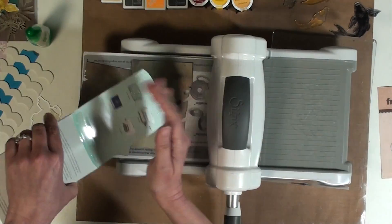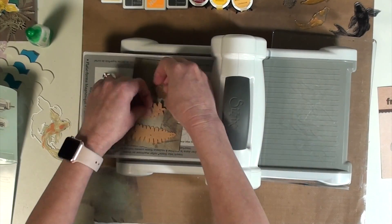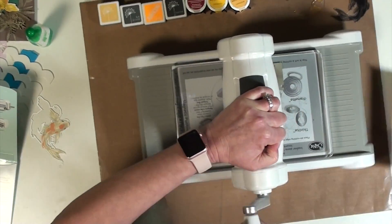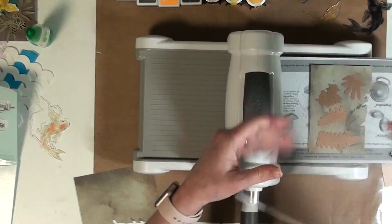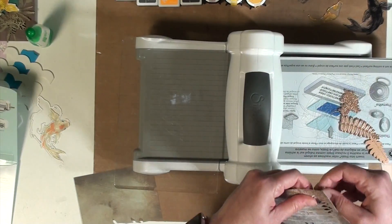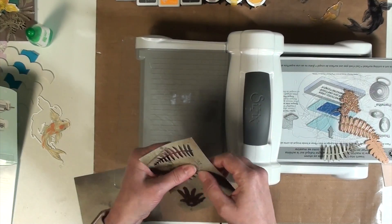To cut all the foliage that went into this project I used a Spellbinders fern die set in the green paper from the Tim Holtz set that I showed you earlier in the video. So I ran it through the die cut machine twice and might have even cut another piece or two just to have some extra pieces to go around the pond area.